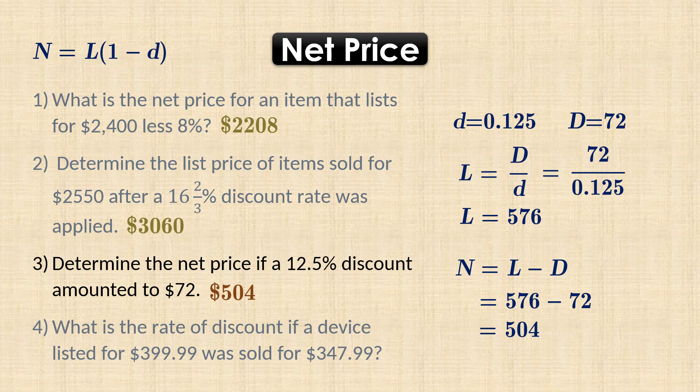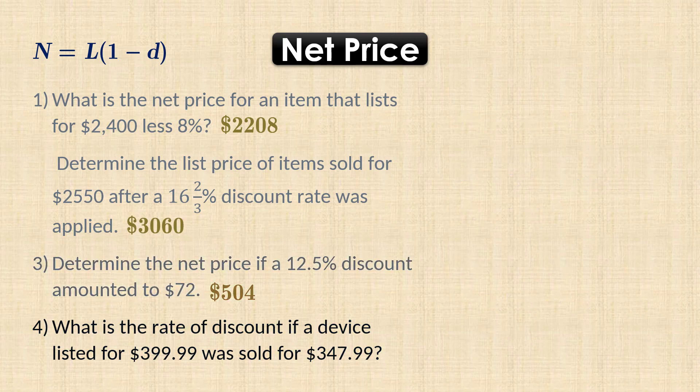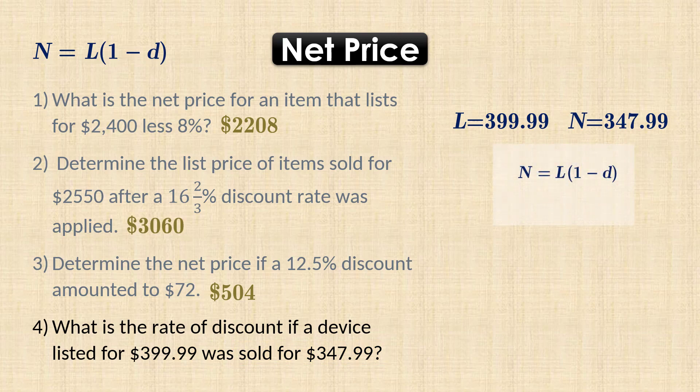In number 4, we want to calculate the rate of discount given a list price of 399.99 and a net price of 347.99. Here, since we have both net price and list price, we can solve for the rate of discount in the net price formula if we want.